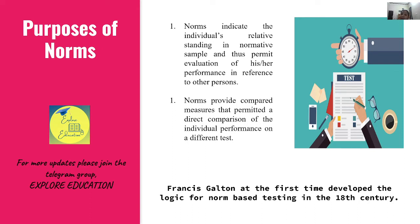दूसरा purpose: norms provide compared measures that permit a direct comparison of the individual's performance on different tests, यानि कि एक test में और बाकी tests में individual कैसा perform कर रहा है — सब तरीके का comparison हमको norm से मिलता है। Francis Galton was the first to develop the logic for norm-based testing in the 18th century। वो Charles Darwin के half-cousin लगते थे, और उन्होंने तब यह logic develop किया।